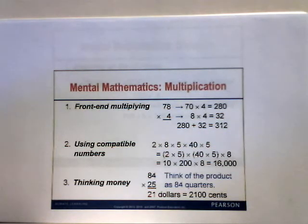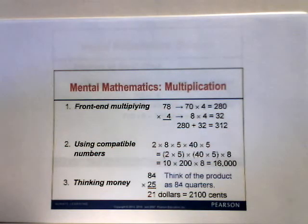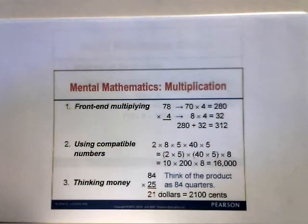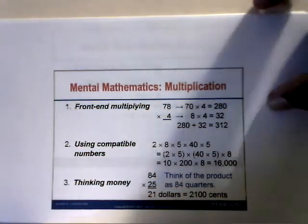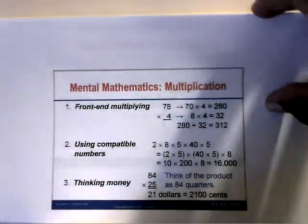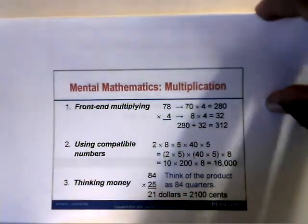A third multiplication technique is thinking of money. For 84 times 25, think of it as 84 quarters, which equals $21. Because 4 quarters make a dollar, divide 84 by 4 to get 21, so 84 times 25 equals 2,100.